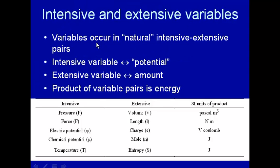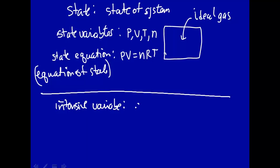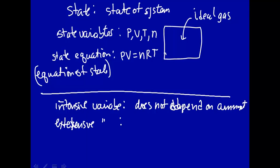Variables often occur in natural, intensive, extensive pairs. Now, maybe you remember from introductory chemistry, maybe not, what intensive and extensive is. So, let's go back and review that. An intensive variable does not depend on amount. An extensive variable, on the other hand, does depend on amount. Alright, so let's look at some of these variables, these state variables, for an ideal gas.